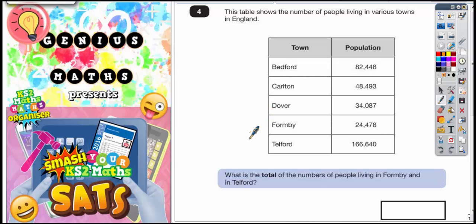Question number four. This table shows the number of people living in various towns in England: Bedford, Carlton, Dover, Formby, and Talford.